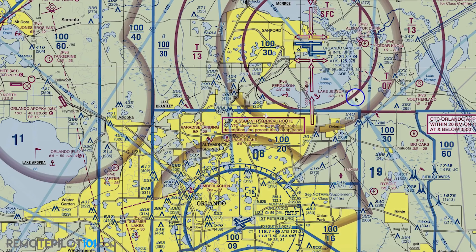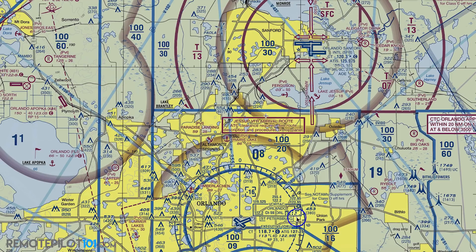Down here you've got to look very closely because the Bravo is transparent through this, but there's a blue dashed line — you can see a little bit better this way. Blue dashed line is Class D, Class Delta airspace.